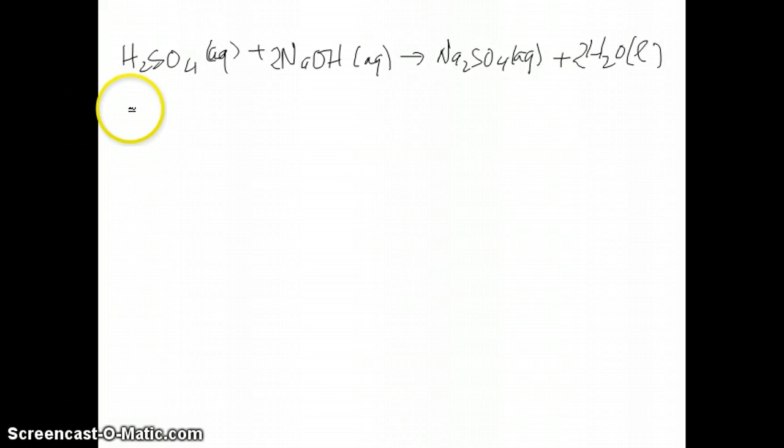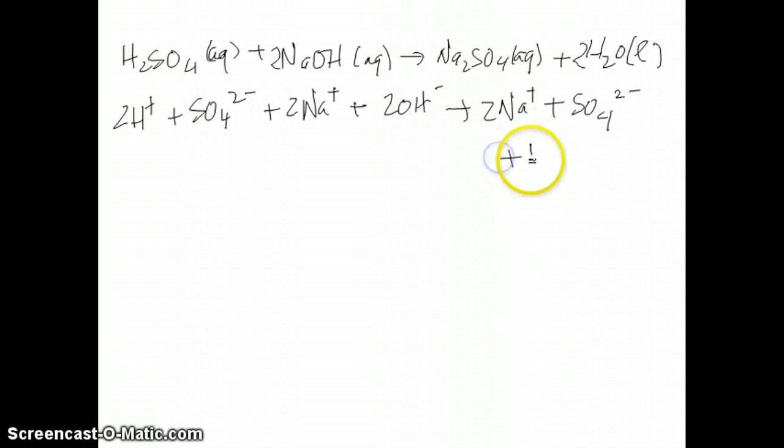Now, if you want to write net ionic equation, what you do is then you notice all the aqueous species can then be split apart into its ions. So, I have 2H+ aqueous, plus SO4 2- aqueous, plus 2 Na+ aqueous, plus 2 OH- aqueous. So, notice that this is 2 NaOH. So, they split into 2 Na and 2 OH. And then I have 2 Na+ from the sodium sulfate. I have the sulfate. And then I have water. Because water as a liquid doesn't split apart.